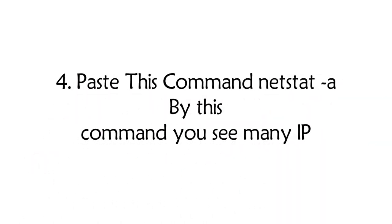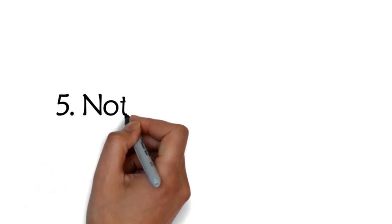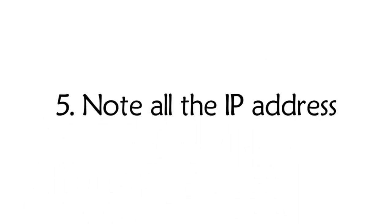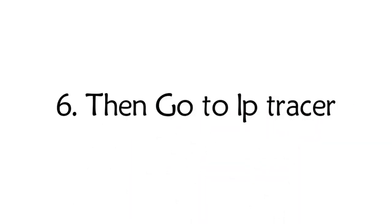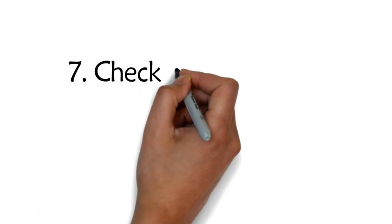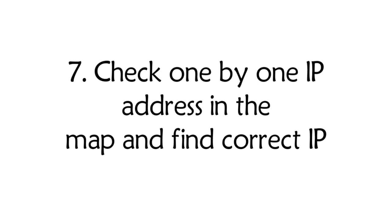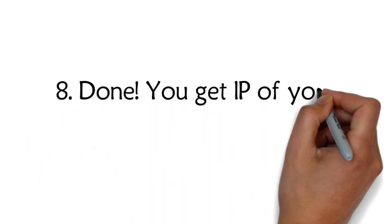Paste this command: netstat -A. By this command you see many IPs. 5. Note all the IP addresses. 6. Then go to IP tracer. 7. Check one by one IP address in the map and find the correct IP. 8. Done. You get the IP of your friend's system by chat.